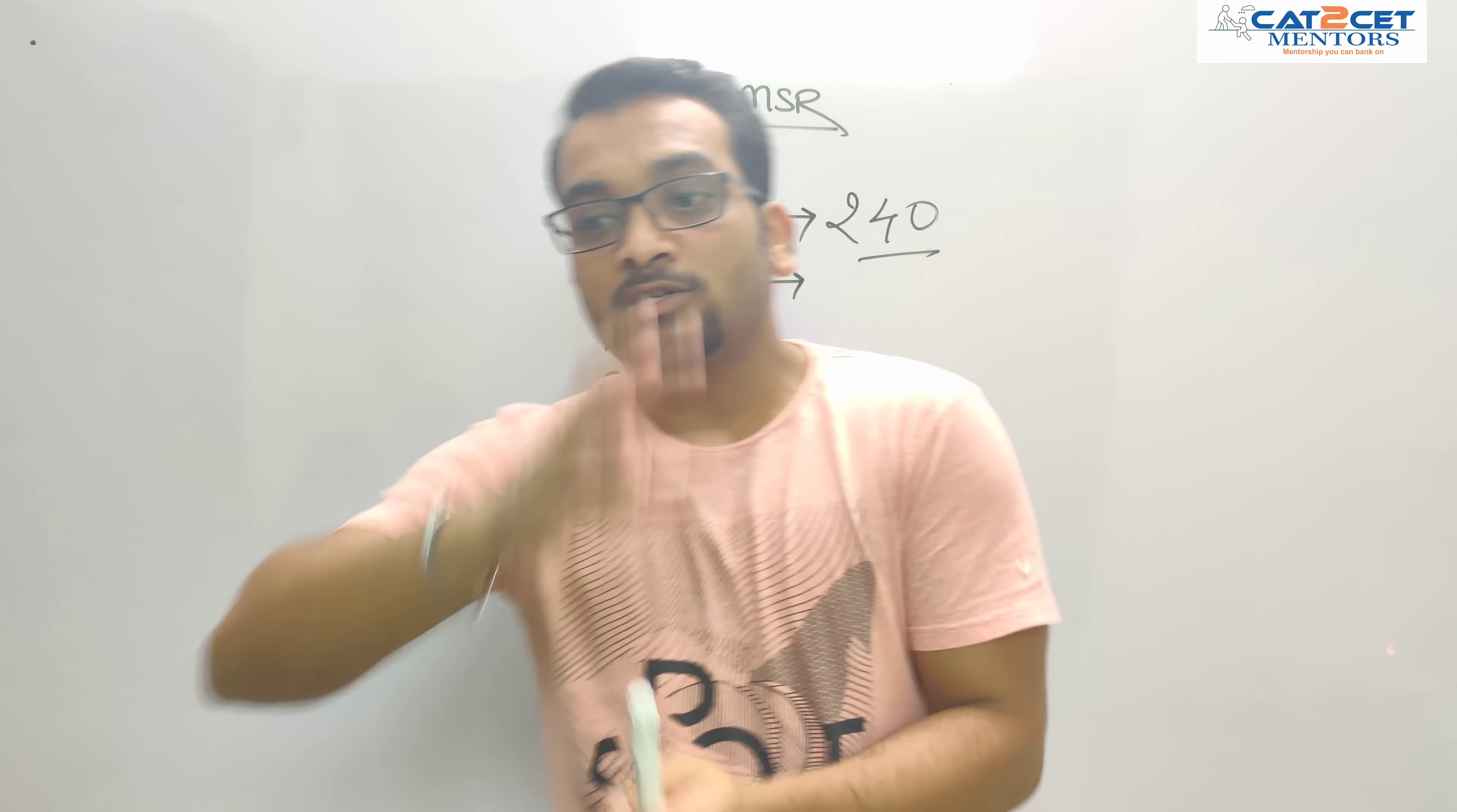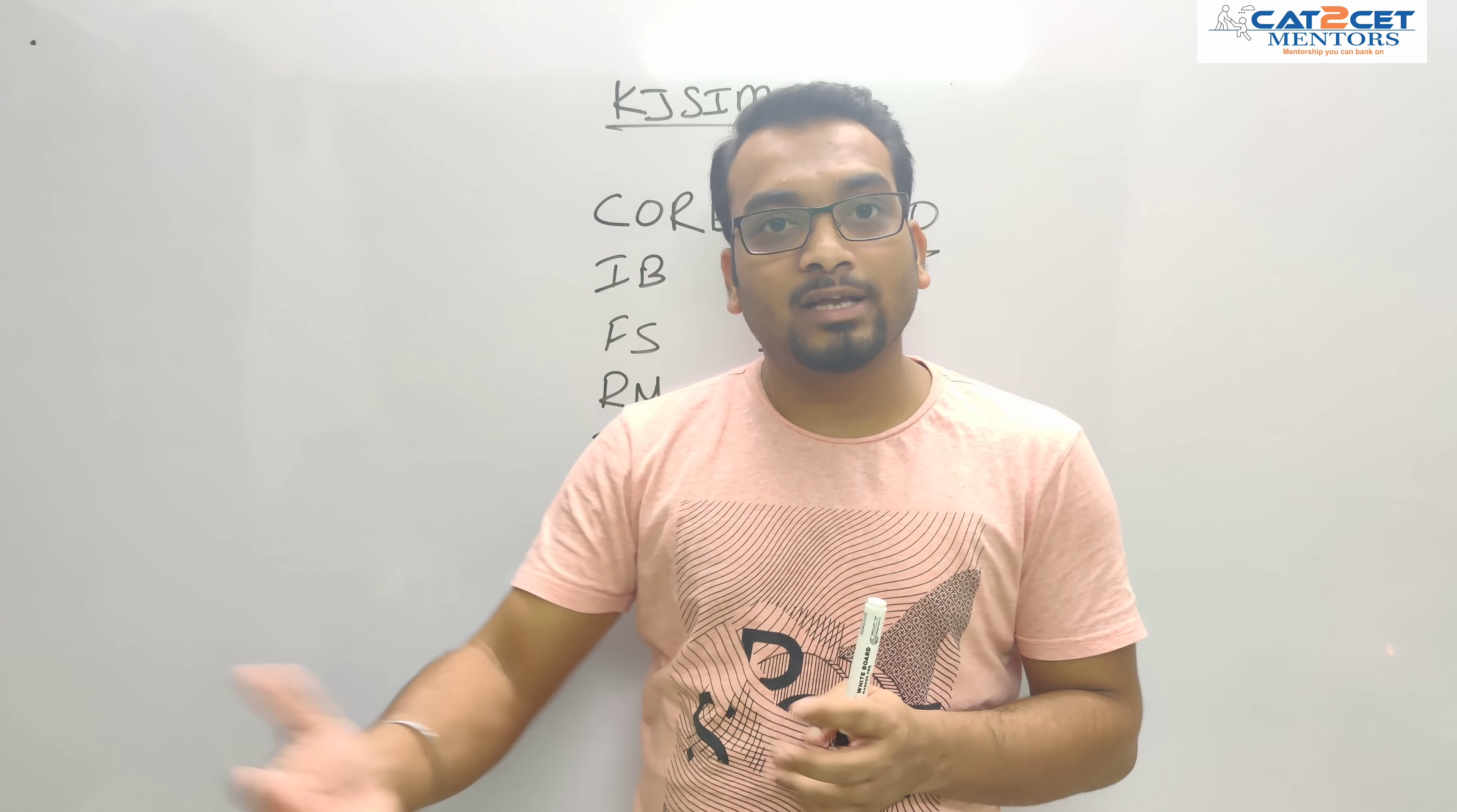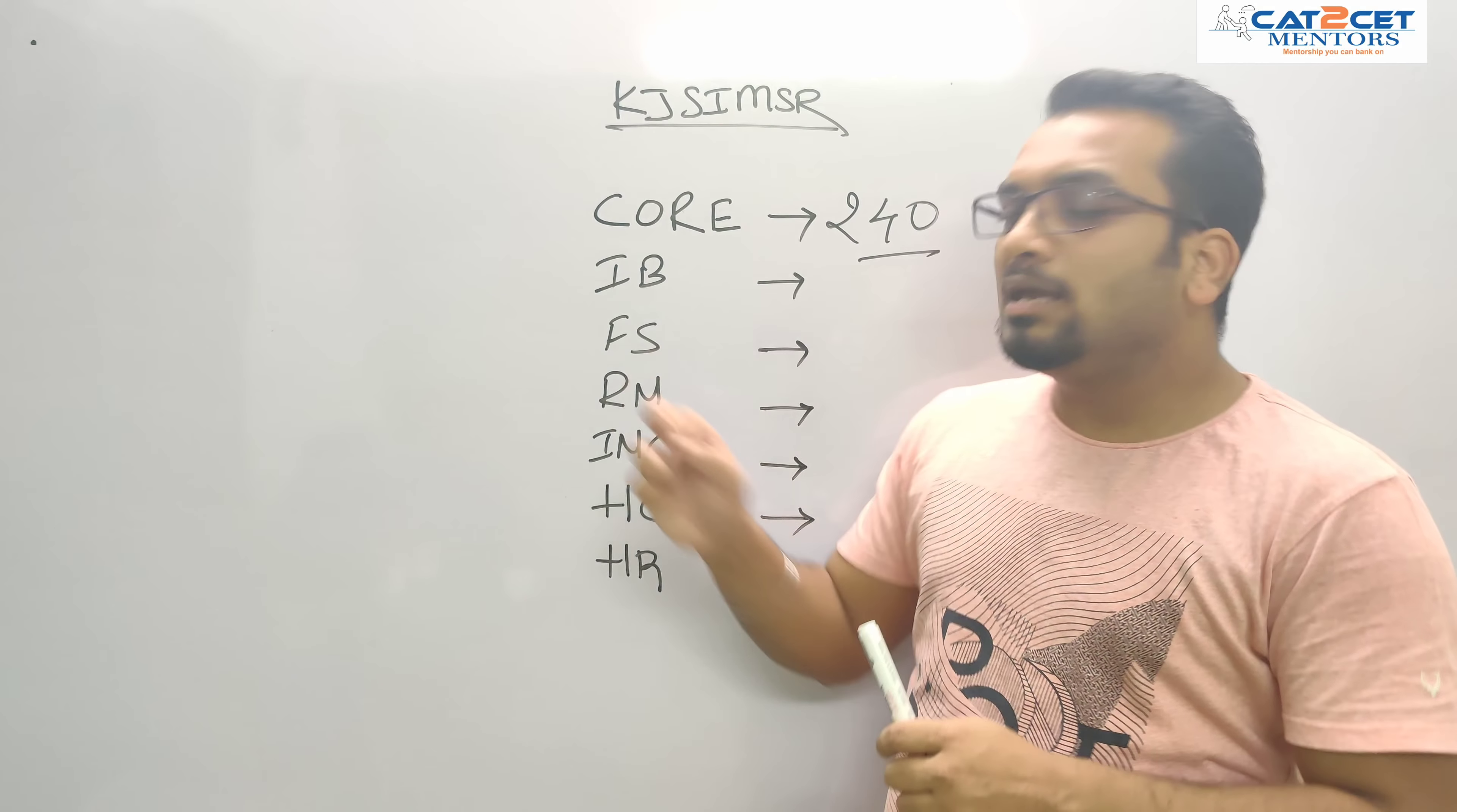Remember one thing: placement for all the programs is common, umbrella placement. There's no restriction on you as a candidate. If you're an IB student, you're not ineligible for XYZ company. That doesn't happen in KJ Somaiya. This is something I really love about KJ Somaiya because the college is damn transparent. Though activities are done by students, most of the time there are no mess-ups because you'll always have faculties to overlook the work done by students. The procedure is going to be purely transparent.